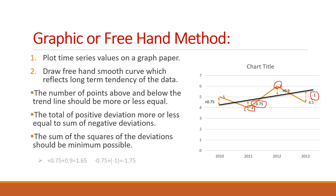The total of positive deviations is 0.75 plus 0.9, which equals 1.65. The sum of negative deviations is minus 1.75. These are more or less equal — we can't always make them exactly equal; slight variation is acceptable. Here 1.65 and 1.75, ignoring signs, are more or less equal. This condition should be satisfied.